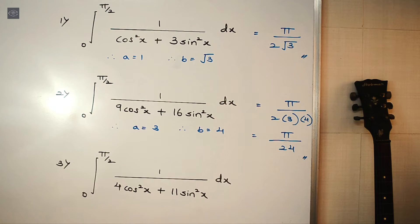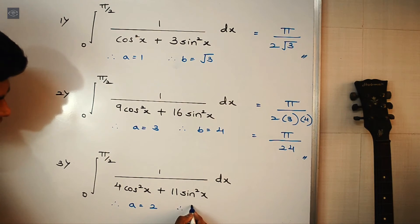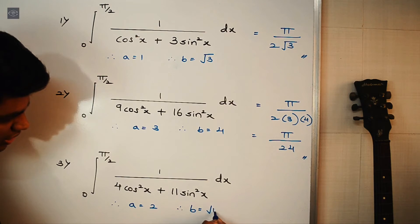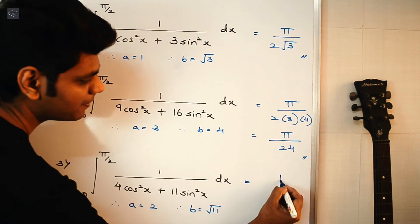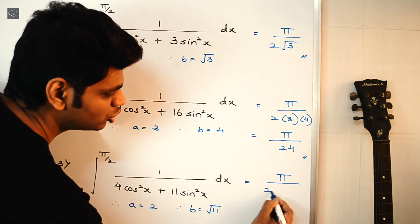Alright, and now similarly for the last one. Here a² = 4, so a = 2, and b² = 11, so b = √11. Therefore, the value of this integral is π/(2ab).